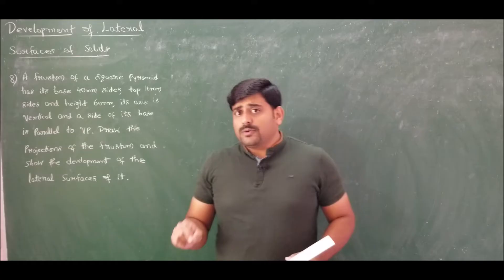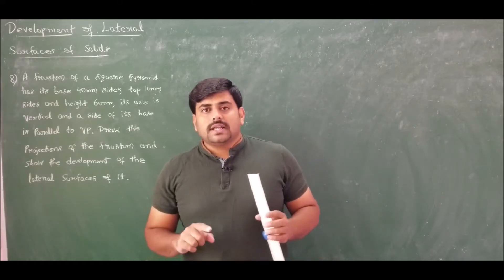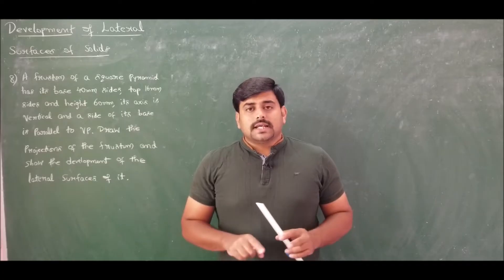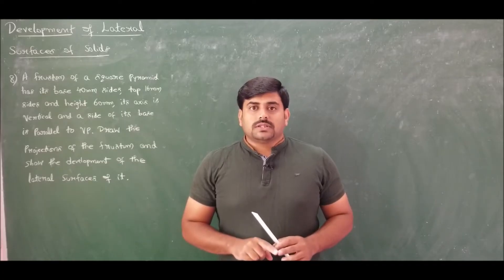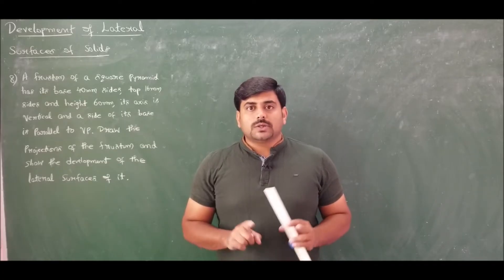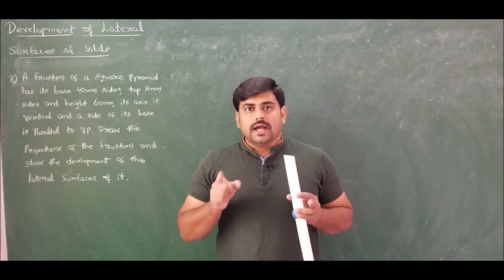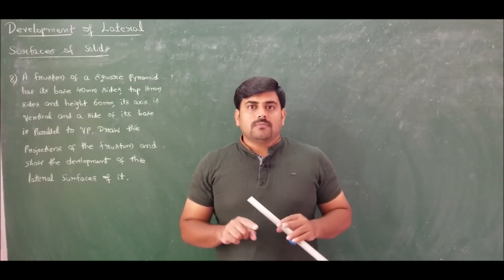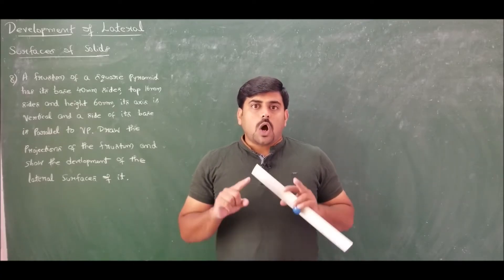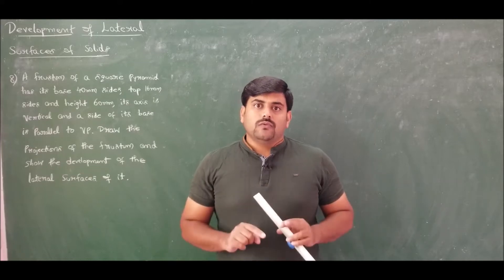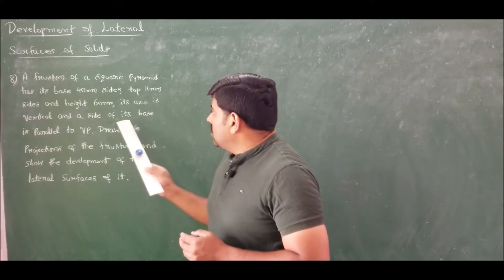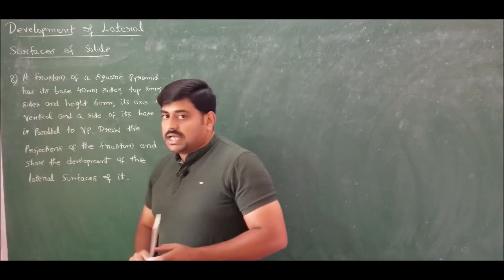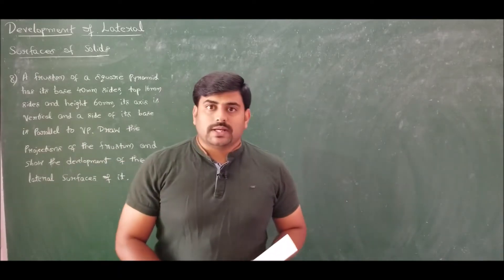The question is how to draw the top view of the square - as a rhombus or as a regular square. If drawn as a regular square, two sides will be parallel to VP and two sides perpendicular to VP. If drawn as a rhombus, all sides are equally inclined to VP. Since the problem states one side of the base is parallel to VP, we draw it as a normal square.